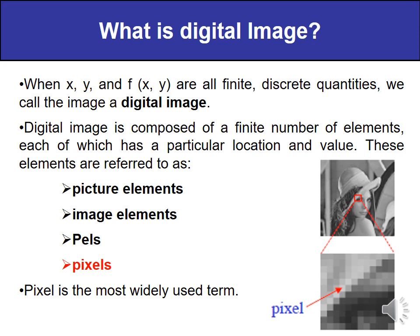What is a digital image? When x, y and f(x, y) — all three terms — are finite and discrete quantities, then that image is known as a digital image. A digital image is composed of a finite number of elements, each of which has a particular location and value. Location means coordinate and value means intensity level. These elements are known as picture elements, image elements, pels, or pixels — where pixel is the most widely used term.